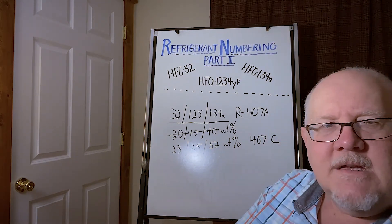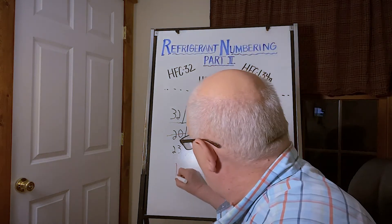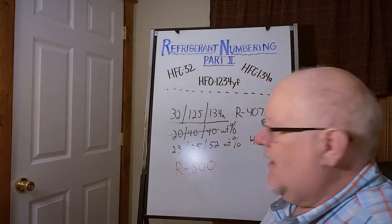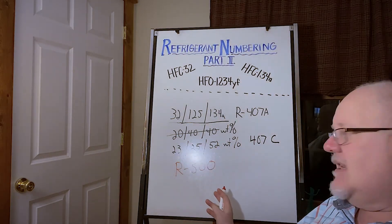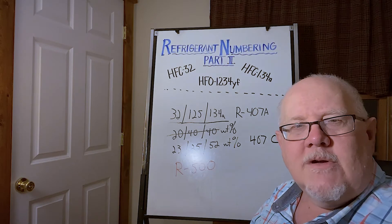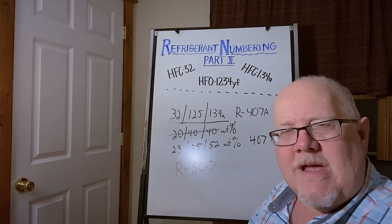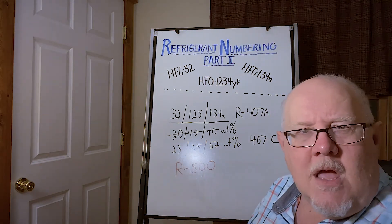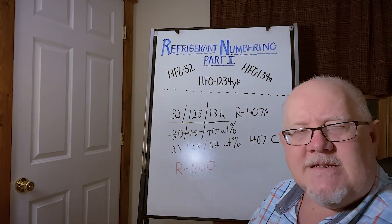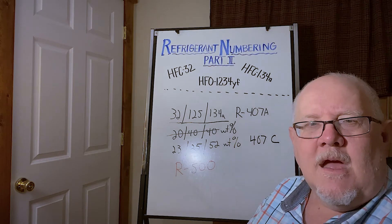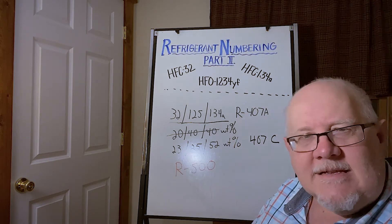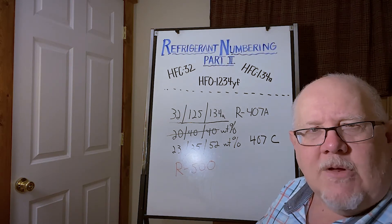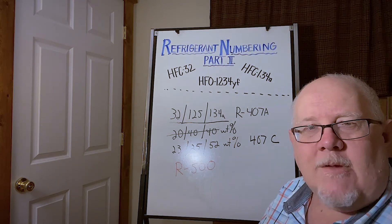There are certain blends that we call azeotropes that get a 500 series designation. I don't know how well you can see that. But azeotropes are special versions of blends. They have some very unique and valuable properties. So these get a lot of attention. And I'm going to do another video where I explain exactly the difference between a blend or a zeotropic blend and an azeotropic blend or an azeotrope.